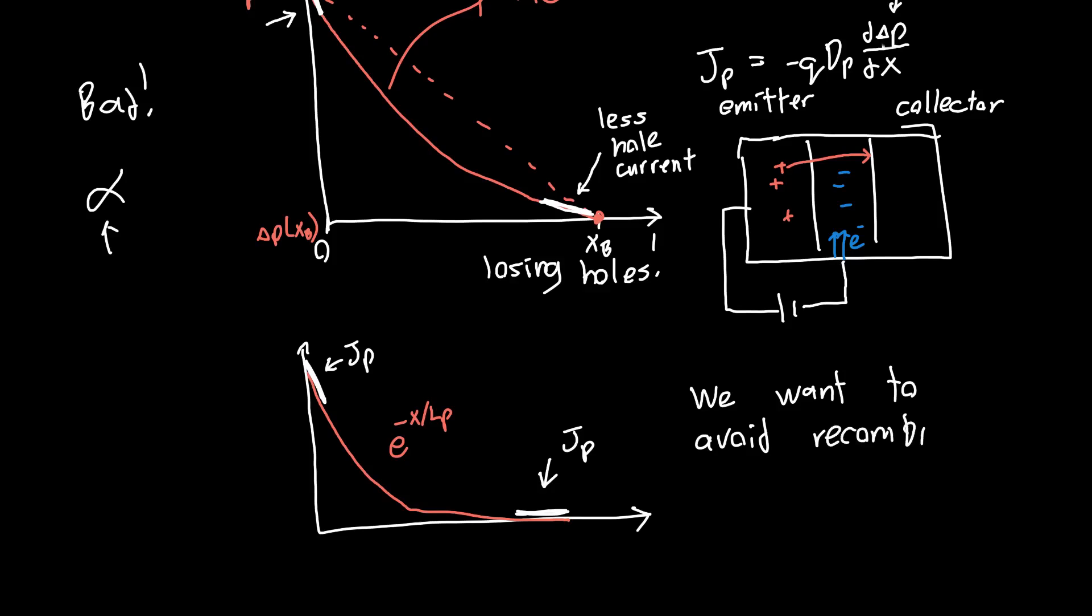So we want to avoid any of our holes getting lost to electrons in the base. And that's sort of intuitive, right? Because the more space these holes have to interact with an electron, so the more physical length they have, the greater the chances that they'll accidentally recombine, and the two will annihilate each other.